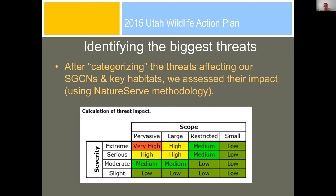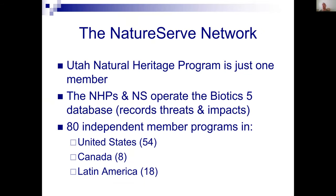How do you identify the biggest threats? The best practices document says: categorize your threats, give them a name, use the same name — don't use five different names for the same thing. Language matters for communication. But a label without a metric isn't that great, so we used NatureServe methodology to calculate threat impact — that's the combination of scope and severity. Scope is a spatial thing: how much of the distribution of the species is affected. Severity is an intensity thing: within the next decade, what are the chances of wiping it out statewide.